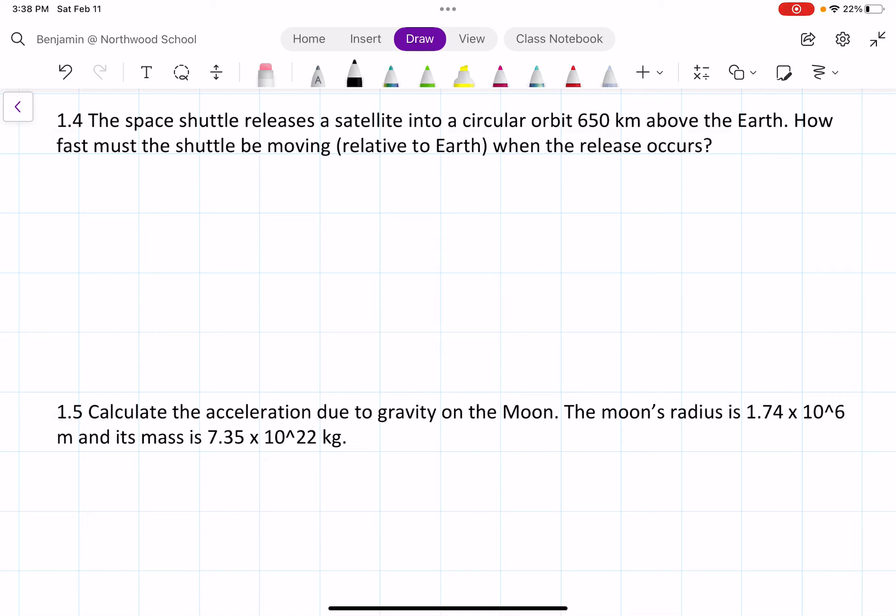For this problem, we have a space shuttle that releases a satellite into circular orbit 650 kilometers above the Earth. How fast must the shuttle be moving when the release occurs?